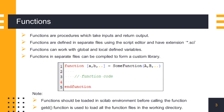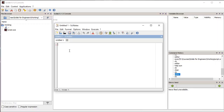To use any external function we need to load the function into Scilab. We do this by calling the getd function. The getd function loads all the function files in the specified directory for use in Scilab.